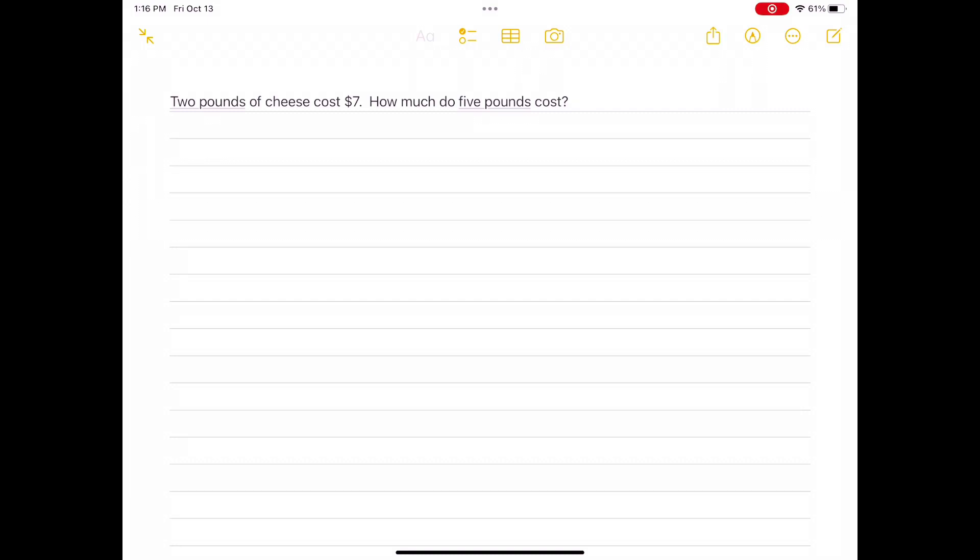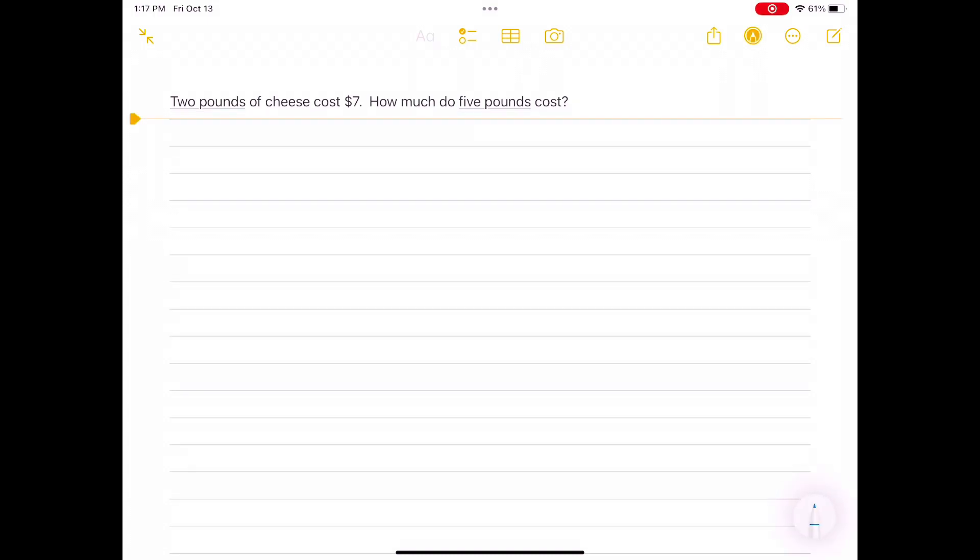2 pounds of cheese costs $7. How much do 5 pounds cost? We set up the problem as 2 is to 7 as 5 is to x, which writes out as 2 sevenths equals 5 over x. And now we cross-multiply: 2x equals 5 times 7. 7 times 5 equals 35. So we have 2x equals 35.